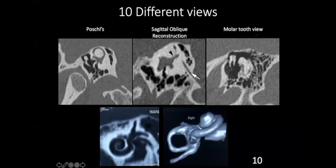There are also other special views. There is Korshkel's view to study the distance of the lateral semicircular canal, sagittal oblique reconstructions to study the vestibular aqueduct, molar tooth views for the ossicles, and specific views to study the entire course of the facial nerve and cochlea — particularly for cochlear implants, cochlear malformations, or measuring cochlear length. You can also do 3D reconstruction. Modern CT scanners provide so many advanced tools.